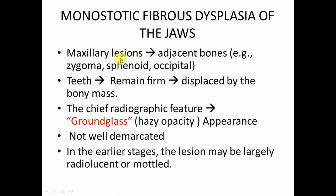In monostotic fibrous dysplasia, the maxilla is more often involved than the mandible. If a maxillary lesion is present, it may involve adjacent bones like the zygoma, sphenoid, and occipital bones. Teeth in the area of fibrous dysplasia will be displaced by the bony mass but will remain firm — this is a very important point.